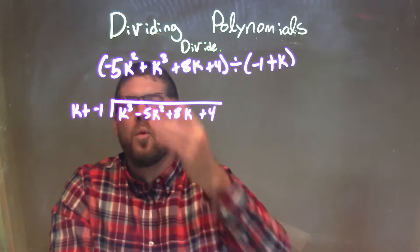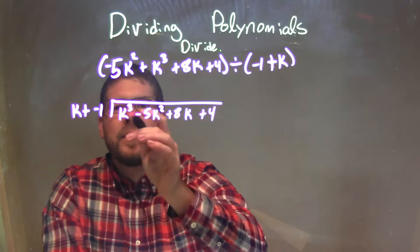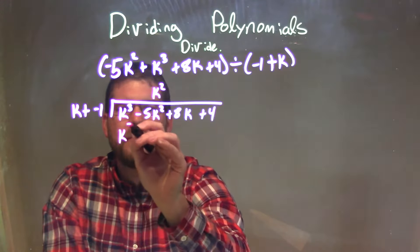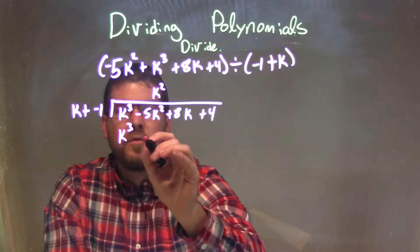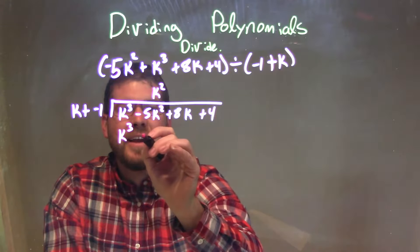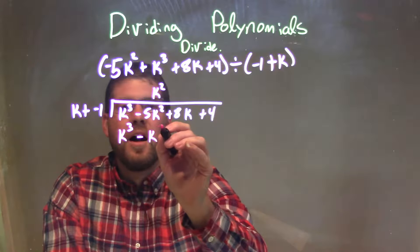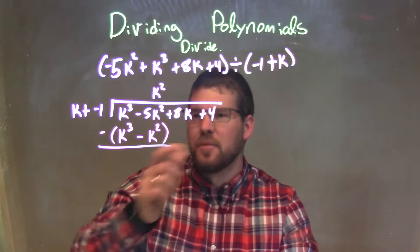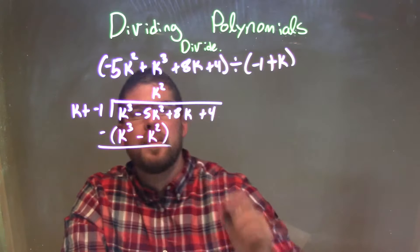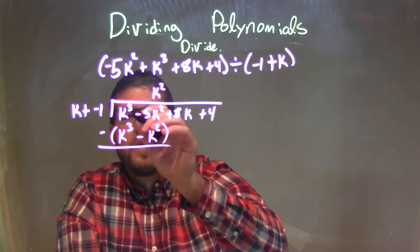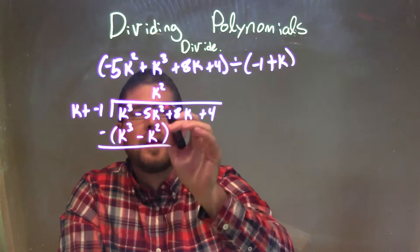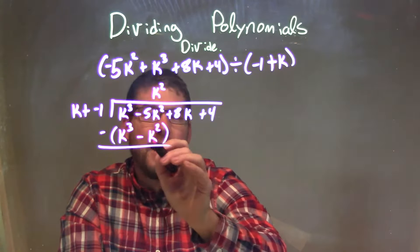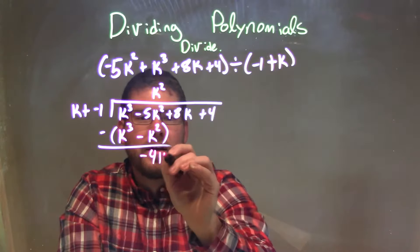Now I'm going to ask the question: what times k gives me k to the third? That's just k squared. So k squared times k is k to the third, and k squared times a negative 1 is a negative k squared. I subtract the two — k to the third minus k to the third cancels. Then negative 5k squared minus a negative k squared is like adding a positive k squared, giving us minus 4k squared.